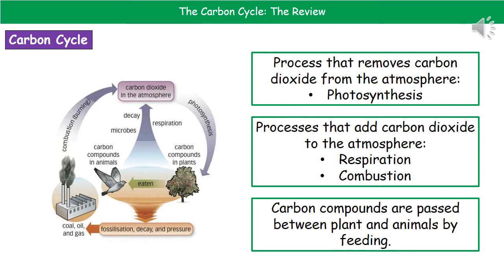The only other arrow they might ask you to label is the one that goes between the plant and the animal, which is feeding. So just remember those four key processes and where they occur on the diagram.